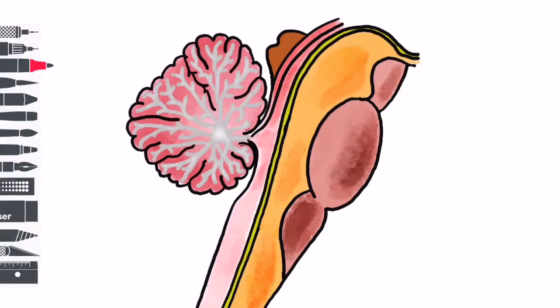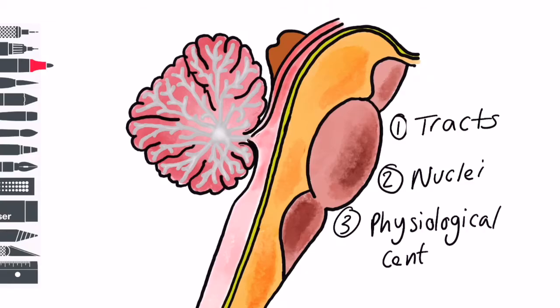Now we can move on to talk about the various functions of the brainstem. As you know, the brainstem contains lots of important structures and its detailed anatomy is complex. We will consider the functions of the brainstem as divided into three main categories: tracts, nuclei, and physiological centres.